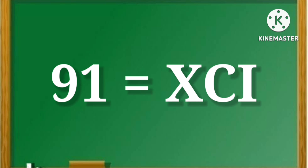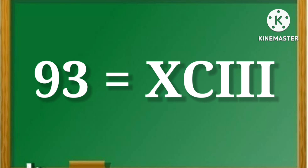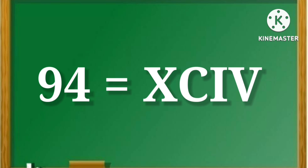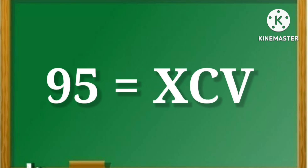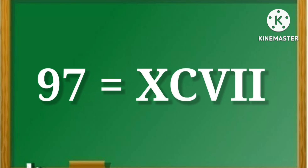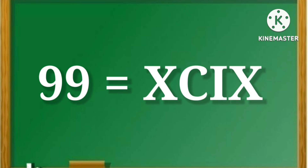91 is XCI. 92 is XCII. 93 is XCIII. 94 is XCIV. 95 is XCV. 96 is XCVI. 97 is XCVII. 98 is XCVIII. 99 is XCIX. 100 is C.